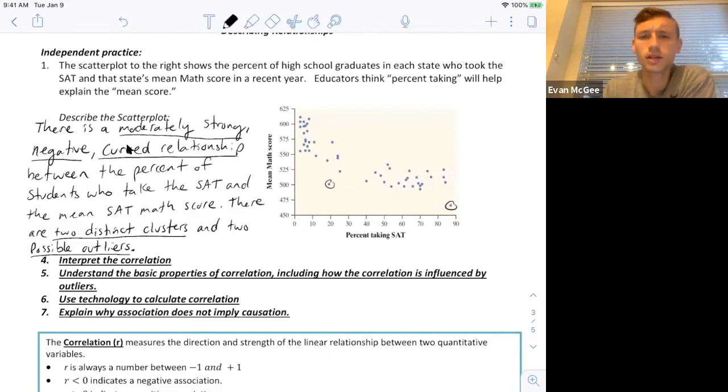So when we're describing the negative relationship, we could say that as the percent of students taking the SAT increases, the mean math score decreases. That's what that negative relationship means. And these two are outliers because the mean math scores are lower for the percent taking the SAT. They're lower than expected. In the next video, we'll talk about a better measurement for the strength of a scatter plot.